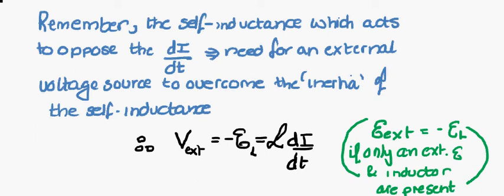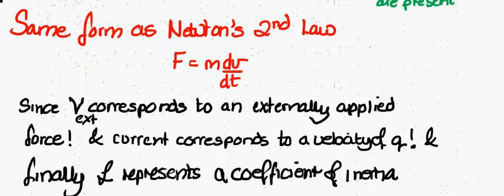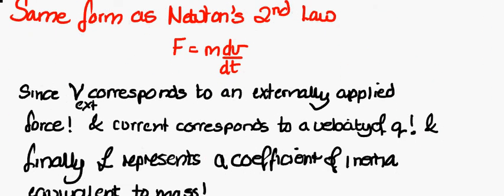We can directly compare that to Newton's second law where we have a force per mass, then a change which is proportional to the change of velocity of that mass with time, and a coefficient of inertia, in this case mass. So we could view it as our inductor is a coefficient of magnetic inertia.